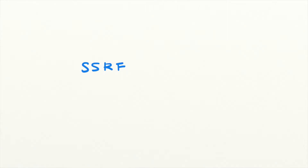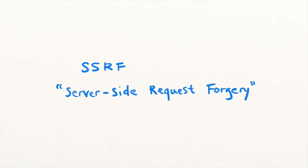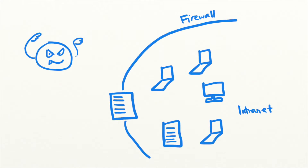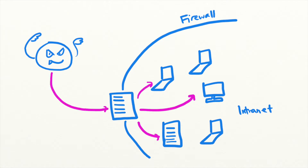Welcome back to Security Simplified. SSRF stands for server-side request forgery. They're a type of vulnerability that happens when an attacker can send requests on behalf of a victim server, and this allows attackers to pretend to be that server on the network.